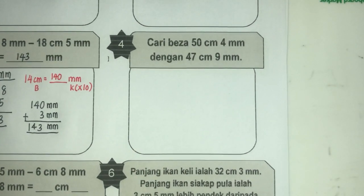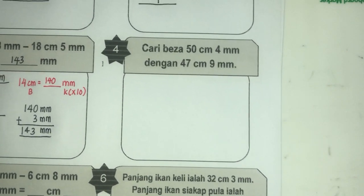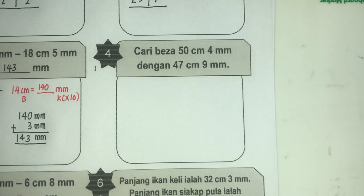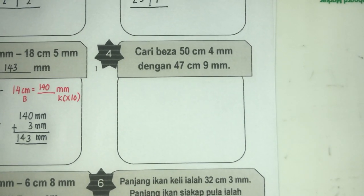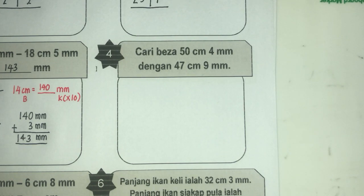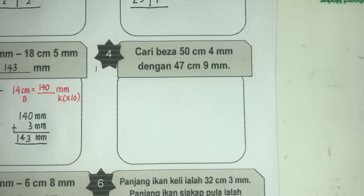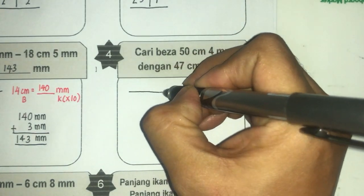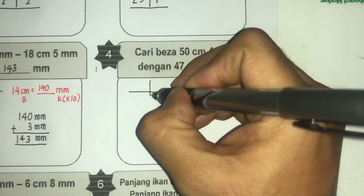Kita pergi kepada soalan yang seterusnya, iaitu soalan keempat. Cari beza 50 cm 4 mm dengan 47 cm 9 mm. Beza bermaksud tolak. Jadi bila sebut beza tu, operasi yang akan kita gunakan ialah operasi tolak. Cuma yang ini dibuat dalam bentuk penyataan masalah.